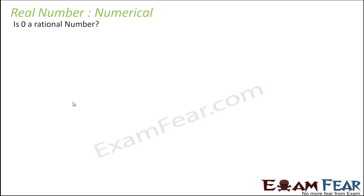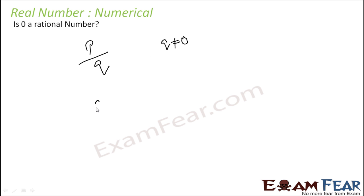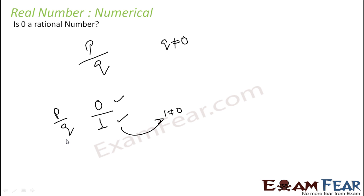Is zero a rational number? A rational number is something you can write in the form p/q, where q is not equal to zero and p and q are integers. Zero can be written as 0/1, where both 0 and 1 are integers and 1 is not equal to zero. Therefore, zero is a rational number.